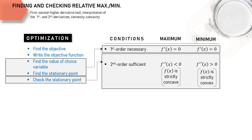Why is it not a necessary condition too? Because the reverse is not true. A strictly concave or convex objective function does not always result from a negative or positive value of the second derivative. Thus, the necessary condition is this.